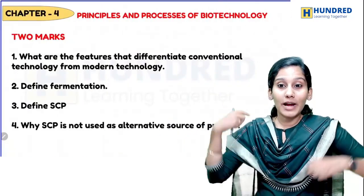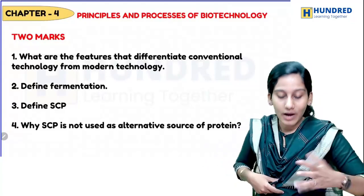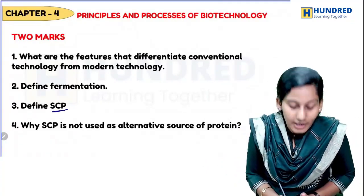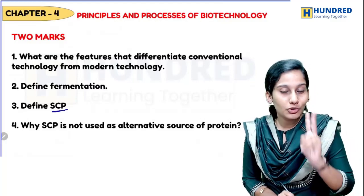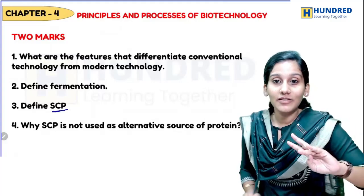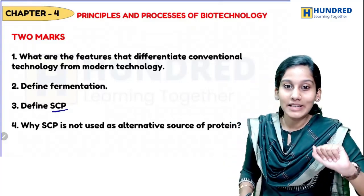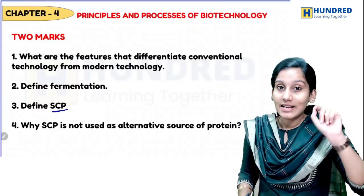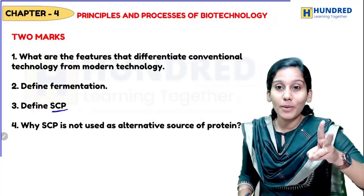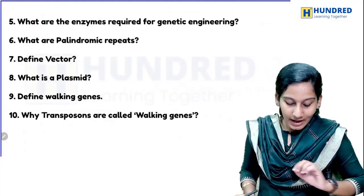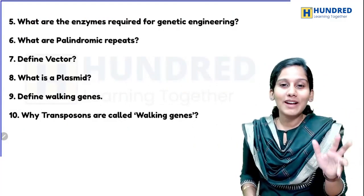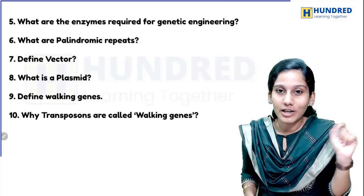Principles and process of biotechnology is very, very important. Two-mark topics include fermentation. Single cell protein is very, very important — single cell protein definition is two marks, what are the organisms involved, and applications are five marks. Vector and plasmid are important — plasmid is going to be very, very important. PBR322 is definitely an unavoidable question.